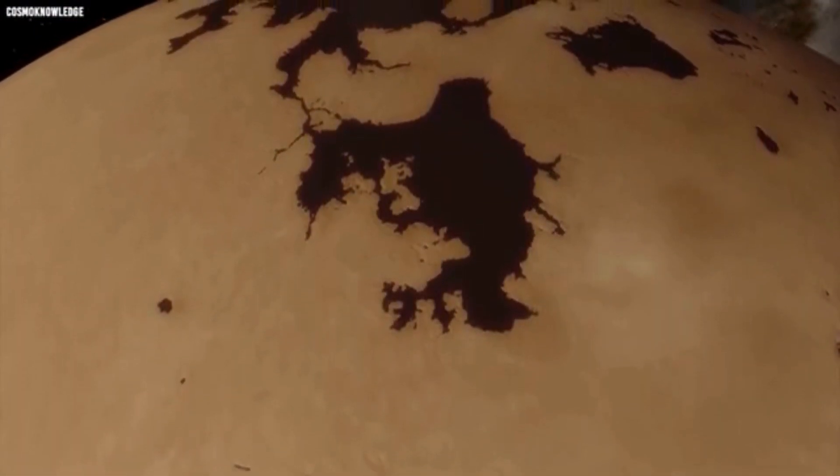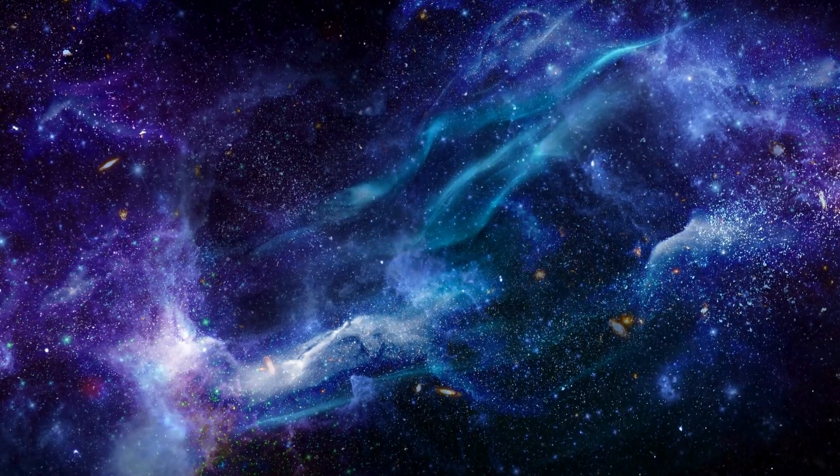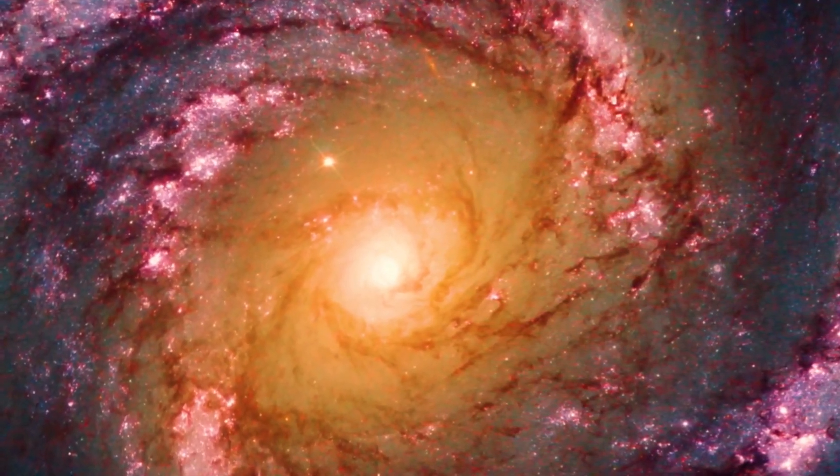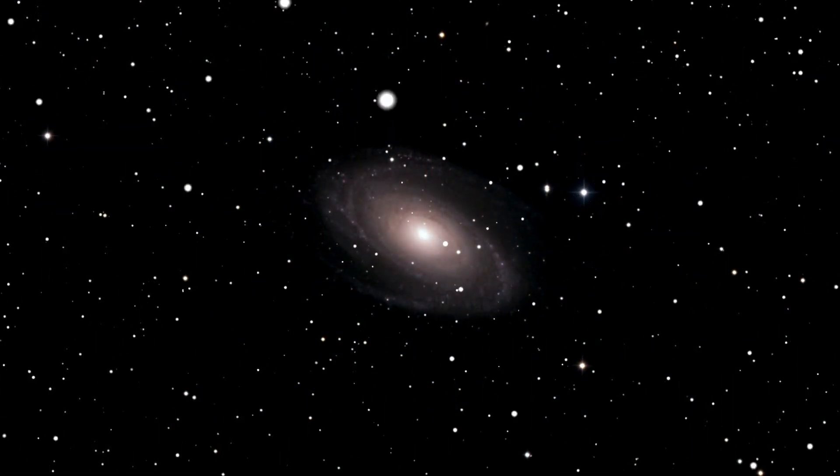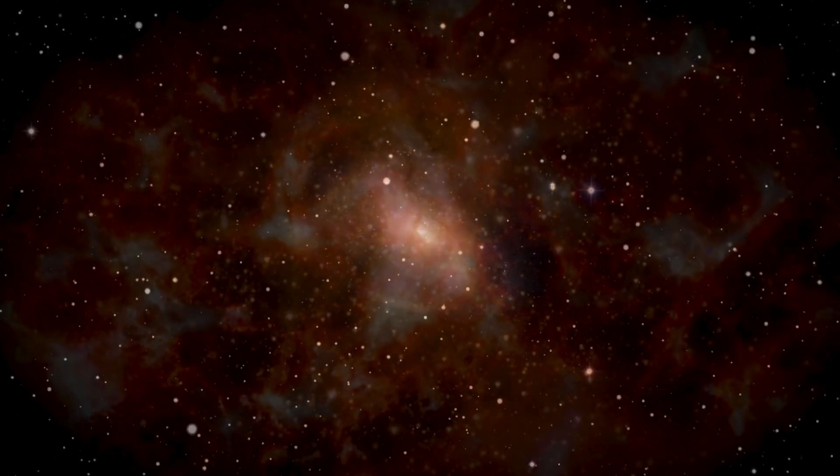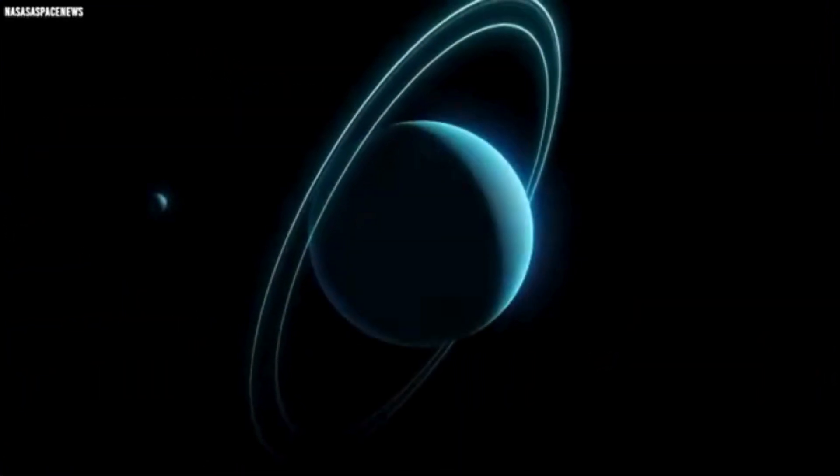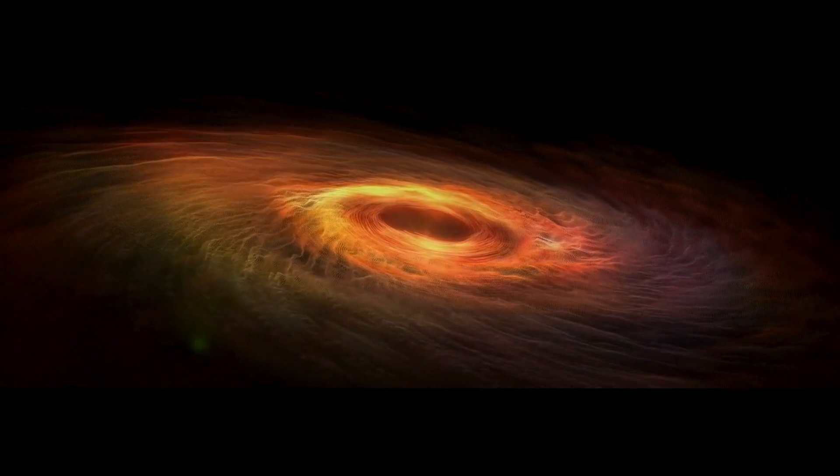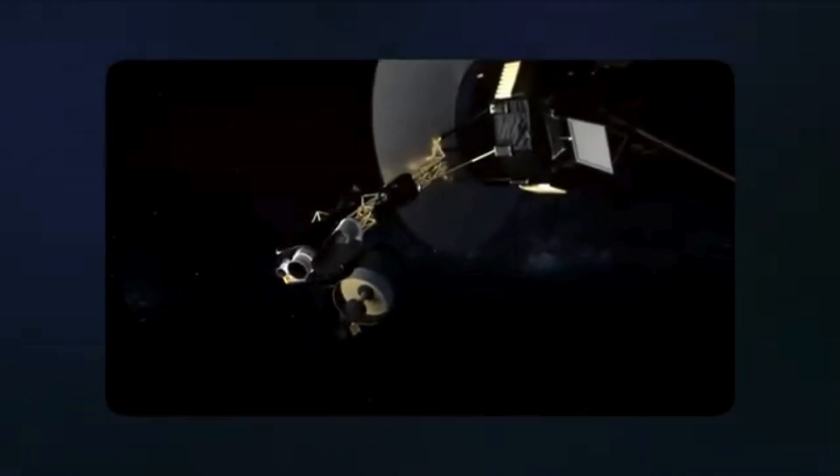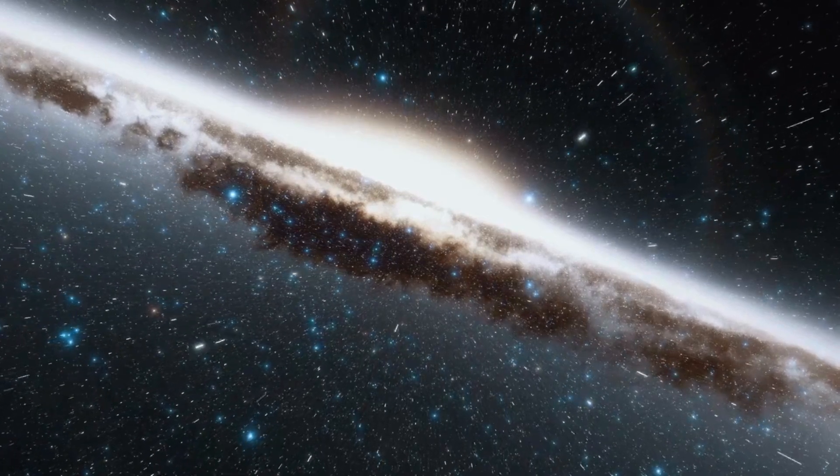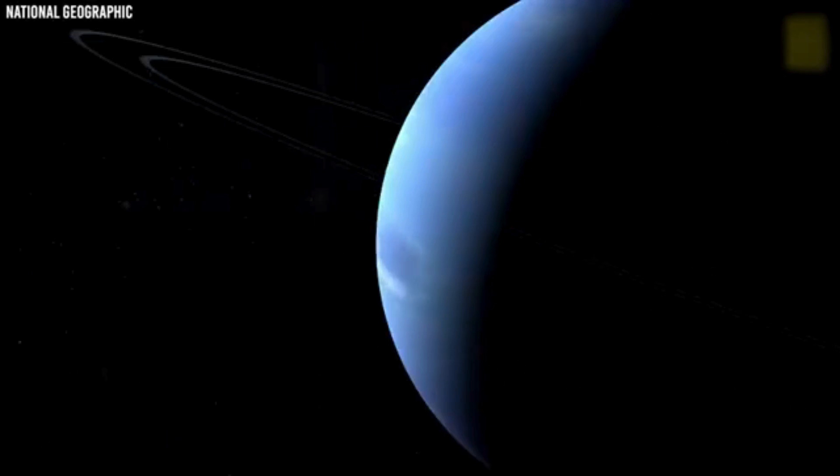Communication with Earth depended on a high-gain parabolic antenna, which had to remain precisely oriented toward our planet. Each Voyager transmitted with a power of about 22 watts, but by the time signals traveled billions of miles, they were so faint that NASA's Deep Space Network had to use massive 70-meter antennas to detect them. Powering the Voyagers were three radioisotope thermoelectric generators (RTGs), which converted heat from decaying plutonium into electricity. Over time, the plutonium decayed, reducing power output and forcing NASA to shut down non-essential instruments.